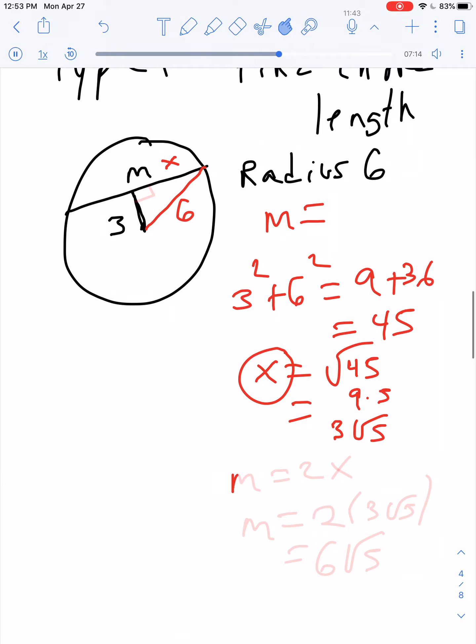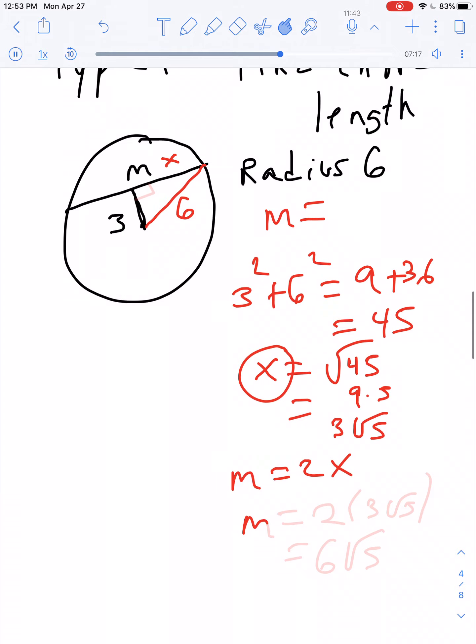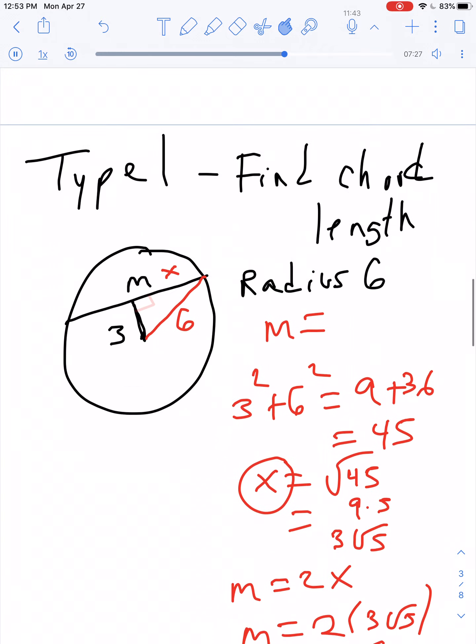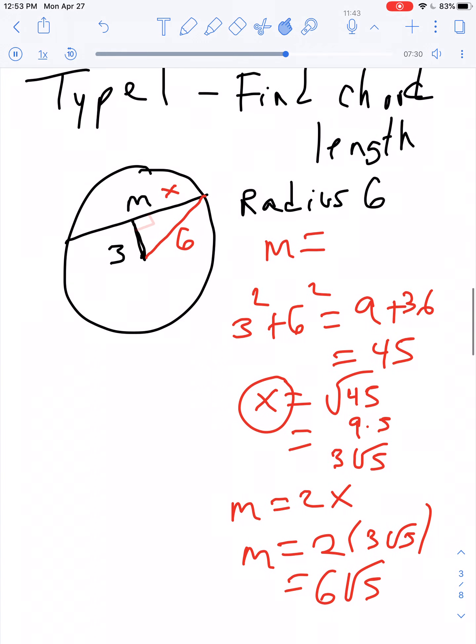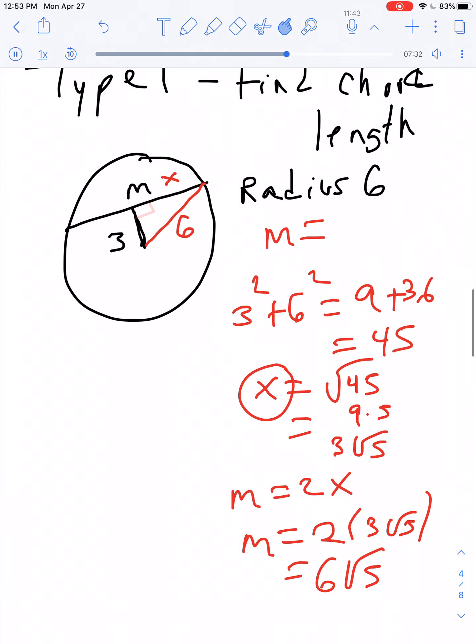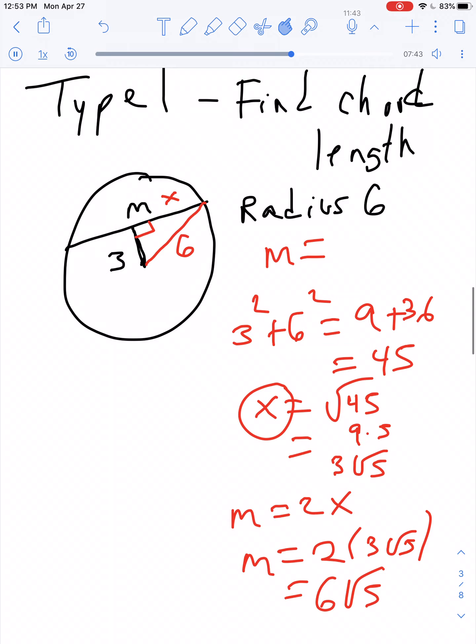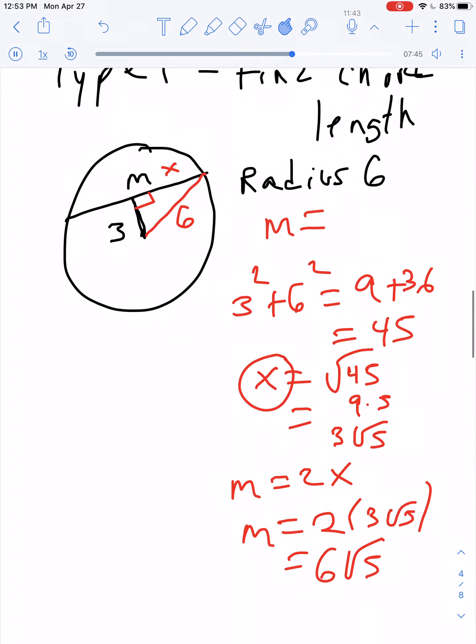But M is two of those. So since M is two Xs from the sketch, then the length of the chord would have to be 2 times 3 root 5, otherwise known as 6 root 5. So in this case, they were given the length from the center, 3, and I gave you the radius 6. That gives you three sides of a right triangle. And then by using Pythagorean theorem, you find the little side, half of it here, which is 3 root 5. And then you double that by multiplying it by 2, so you get 6 root 5 for the other part.